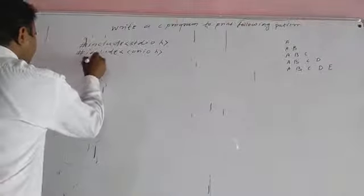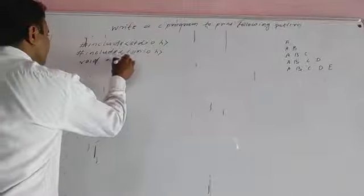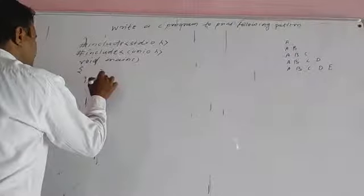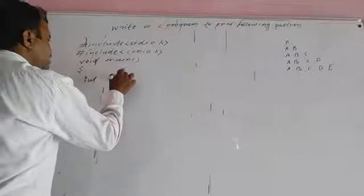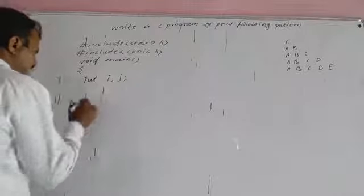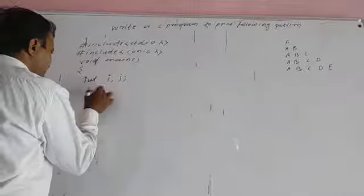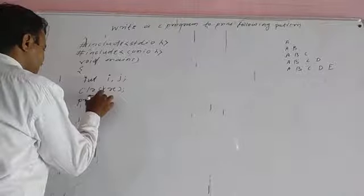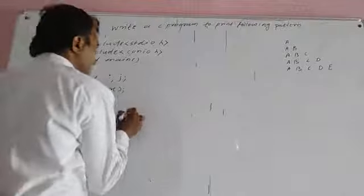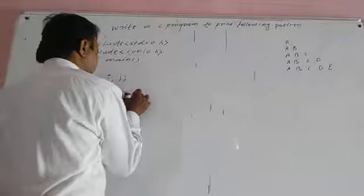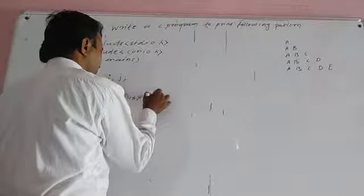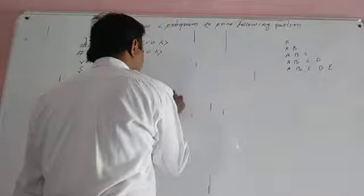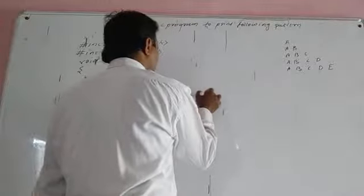Next, void main, open curly brace. Declare integer variables i and j. Then use clrscr(), then getch(). Using printf to display the pattern output.